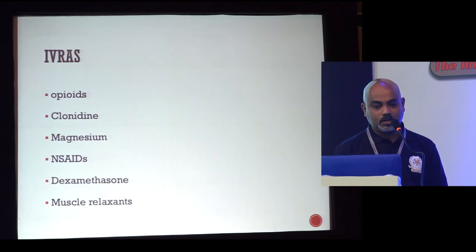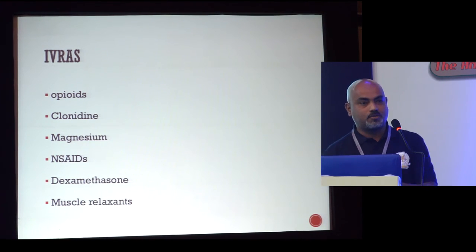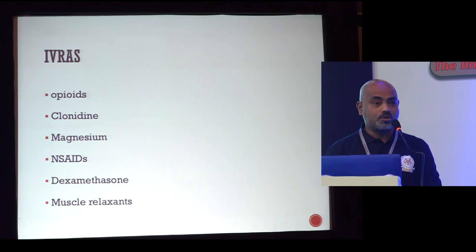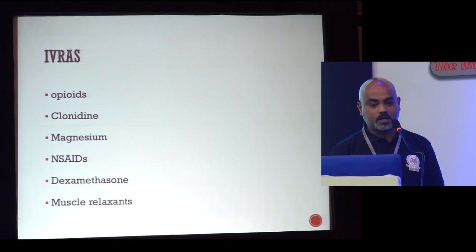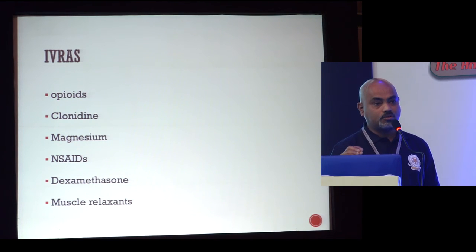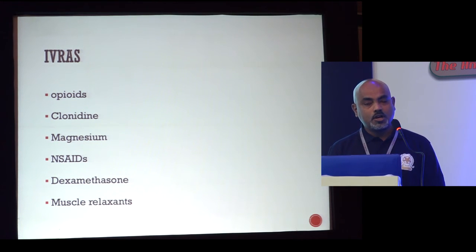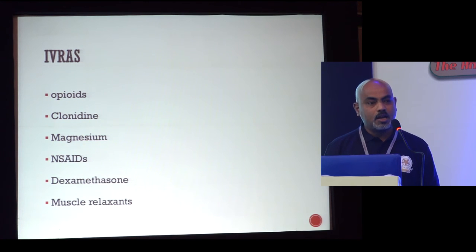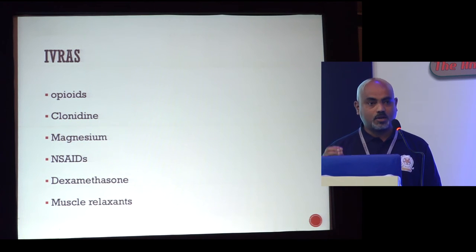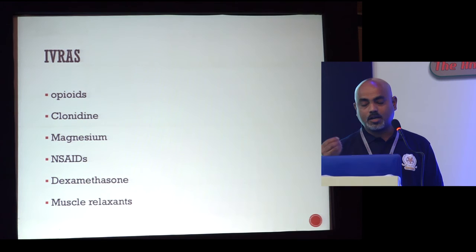Finally, regarding intravenous regional anaesthesia (Bier's block): these are the drugs with some evidence — choose what you want but choose carefully. Opioids have strong evidence. Clonidine has good evidence. Ketamine has good evidence. Non-steroidals are very commonly used, though the evidence is equivocal. Dexamethasone does not have great evidence at the moment. Muscle relaxants have quite a few studies showing improved motor block and helping in reduction of fractures.